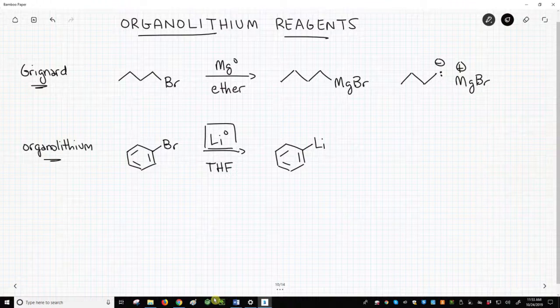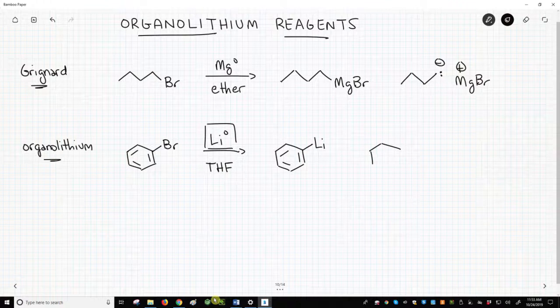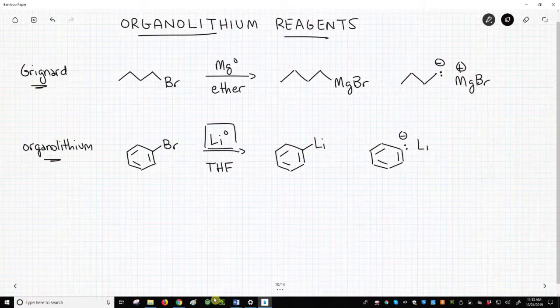We can draw this ionic as well. In fact, I would draw it ionic if I were using it in a reaction to highlight the nucleophilicity of the carbon. Let's draw that structure. Again, we have a carbanion, and it's balanced by our metal, lithium in this case, lithium plus.